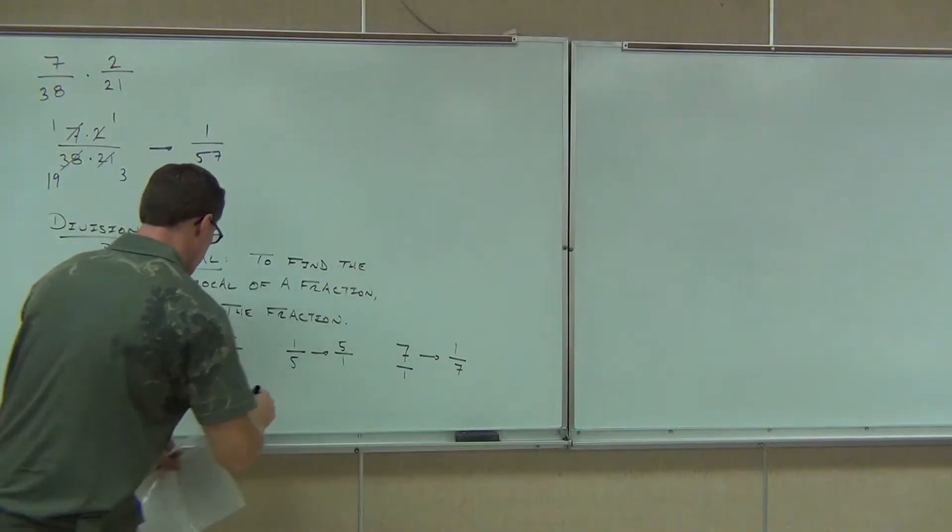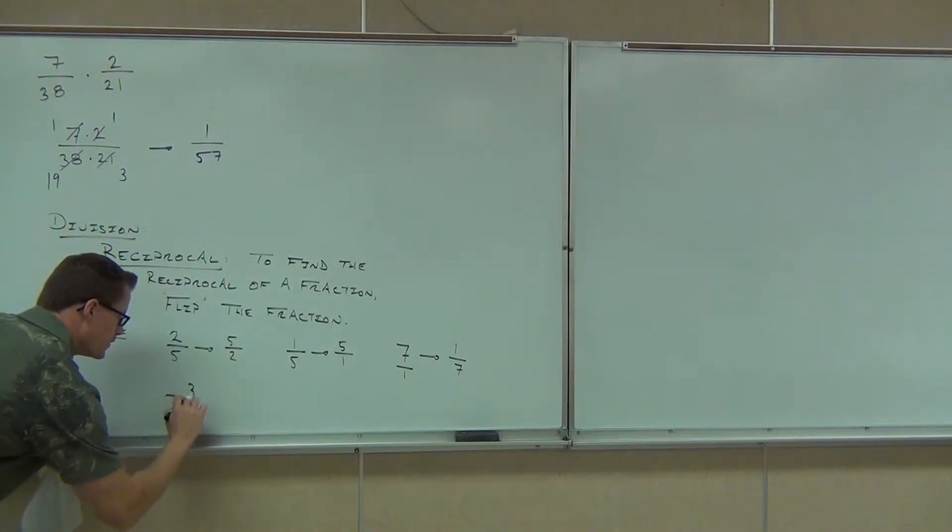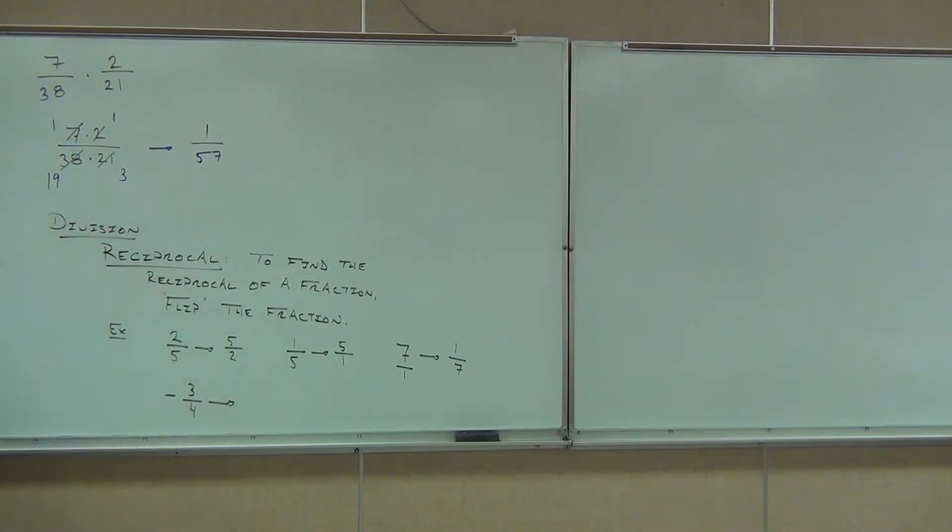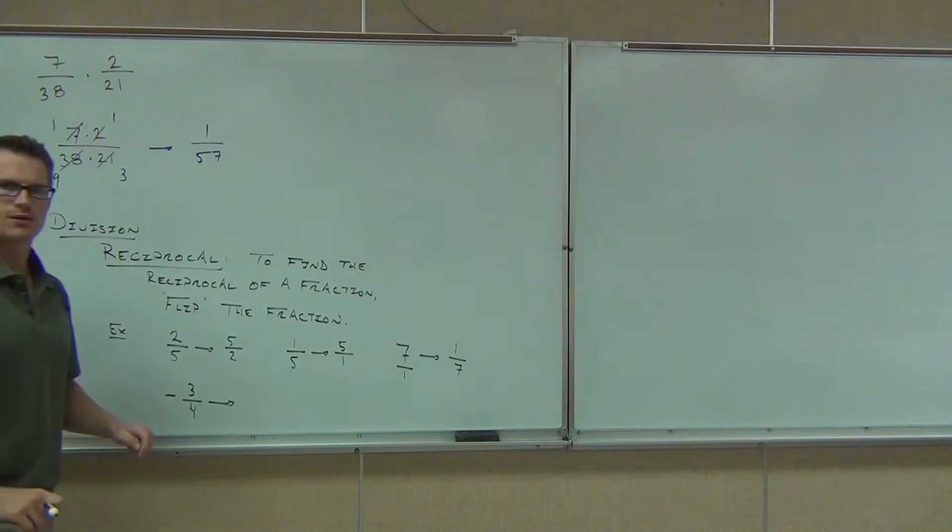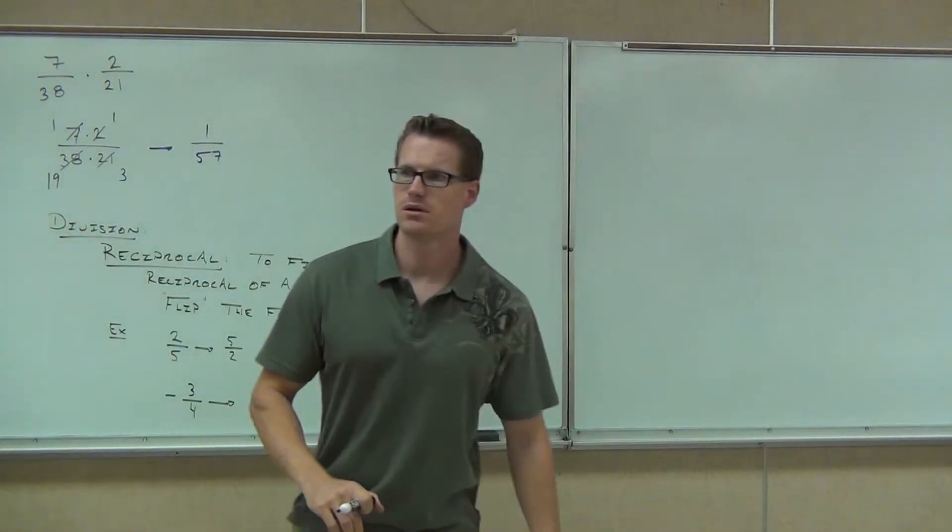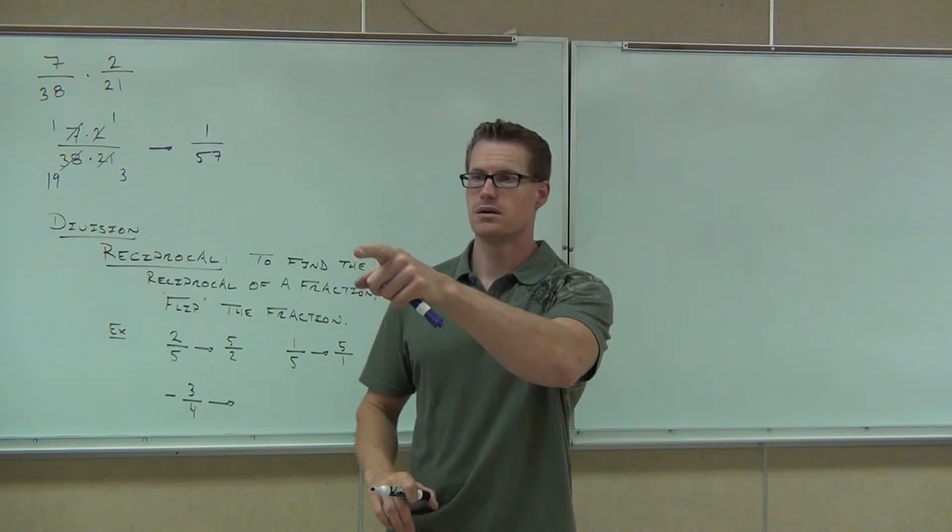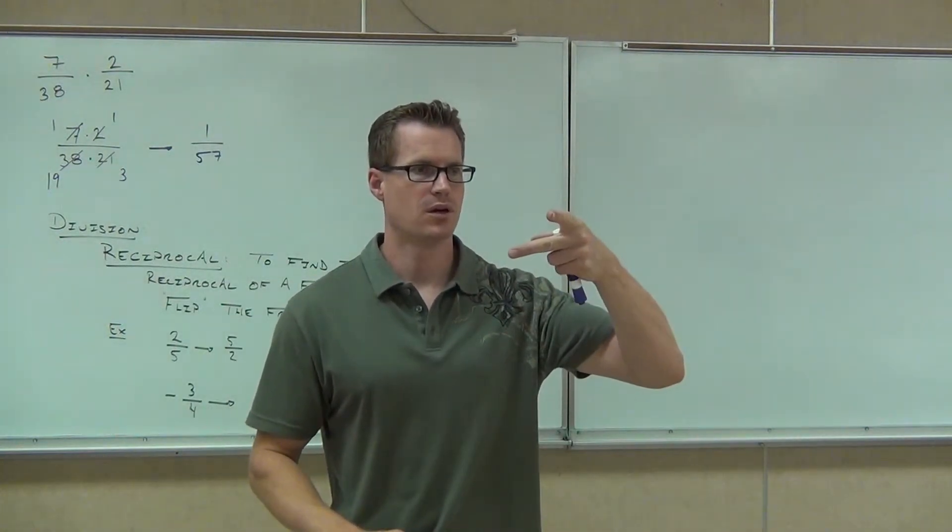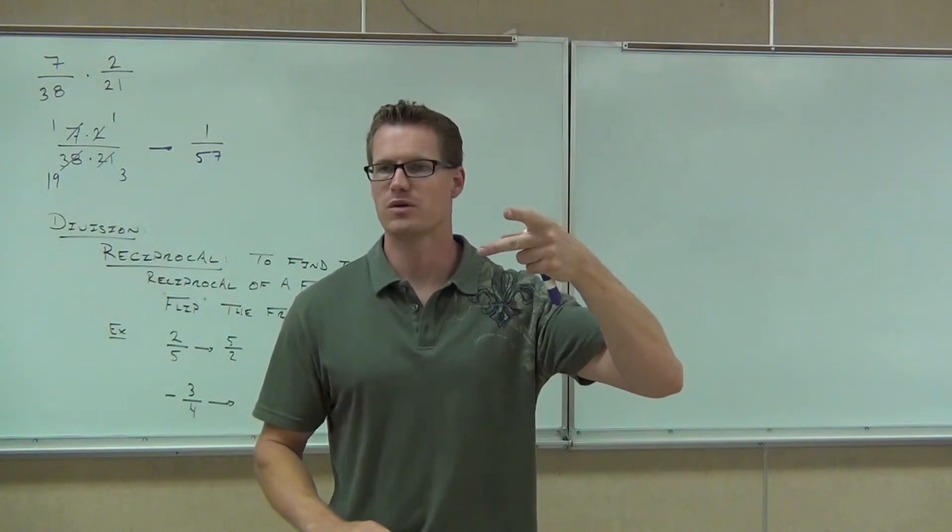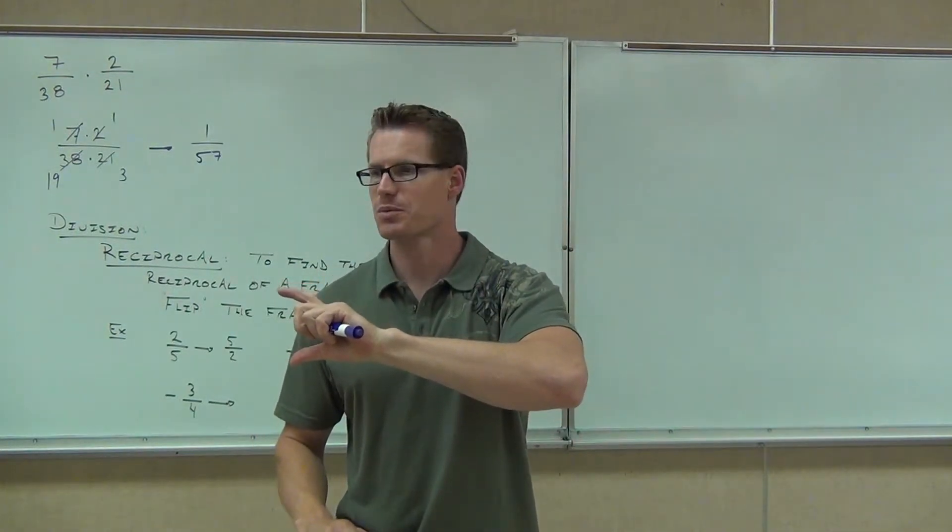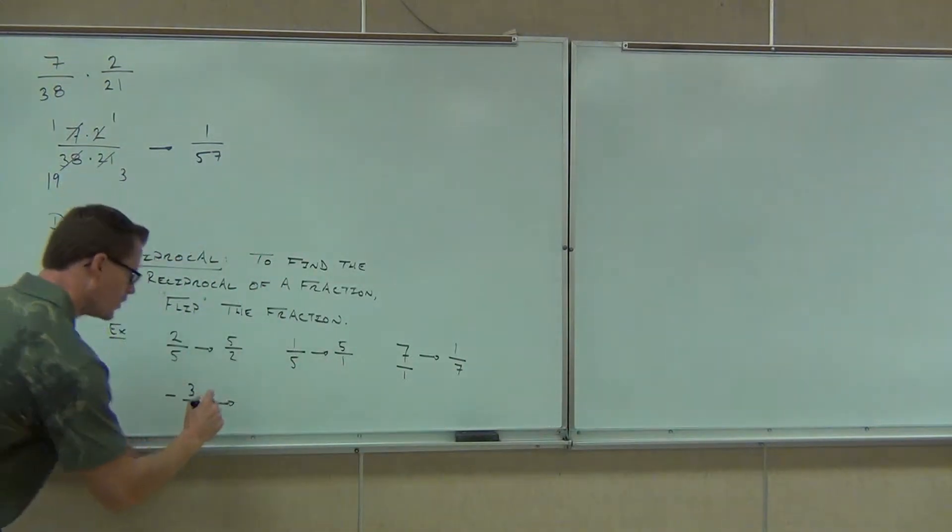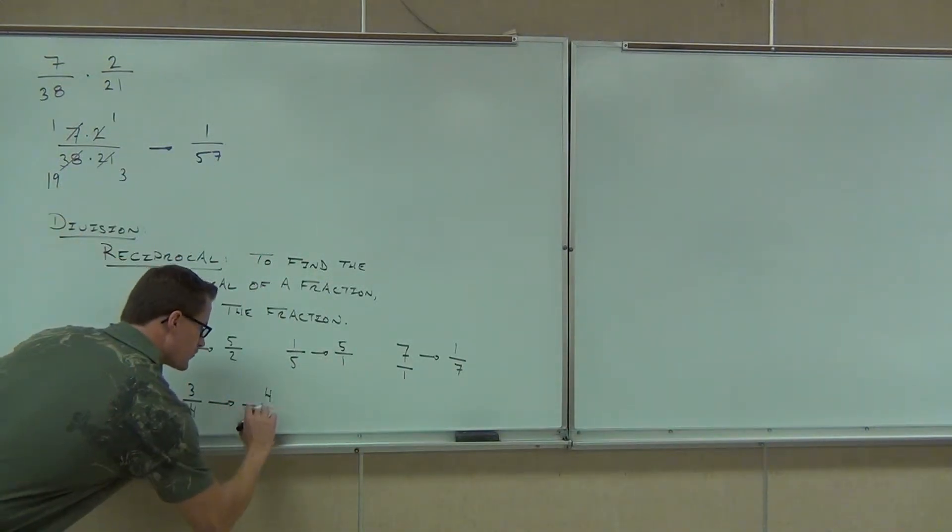One more I did want to show you. Let's say that we had negative 3 fourths. What's the reciprocal of negative 3 fourths? Negative 4 thirds. So do I change the sign of my fraction when I flip it over? If I'm just reciprocating? No. So if I have a negative 3 fourths, the reciprocal is a negative still. It's negative 4 thirds. I just wanted you to see that that negative doesn't change at all. We're simply flipping that fraction over.